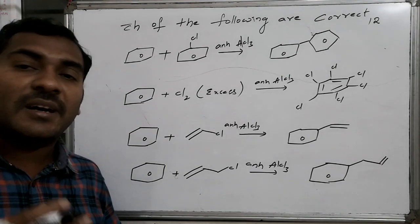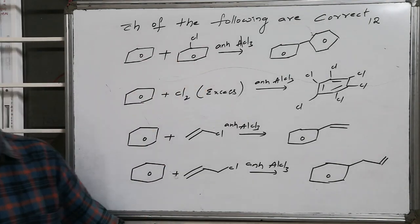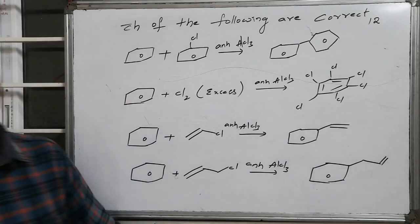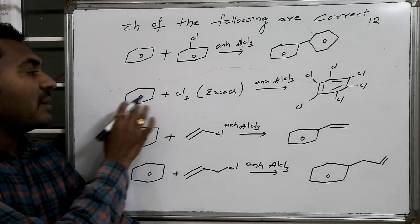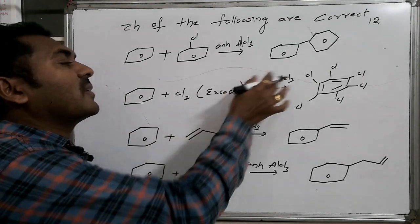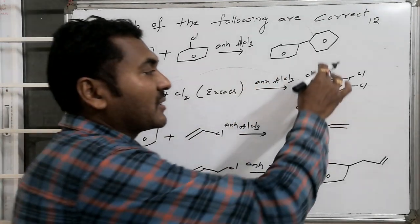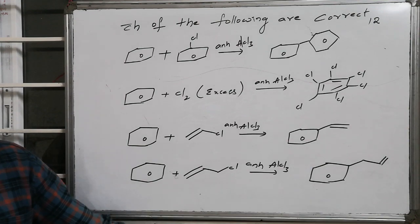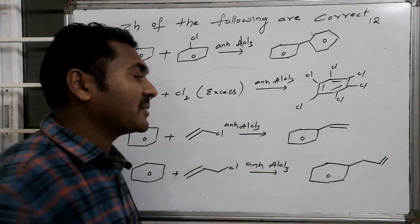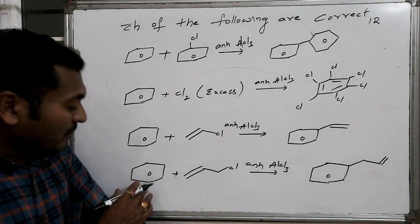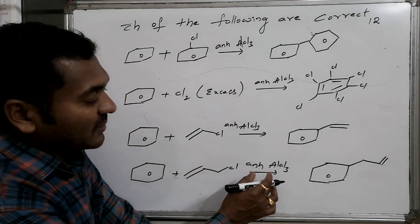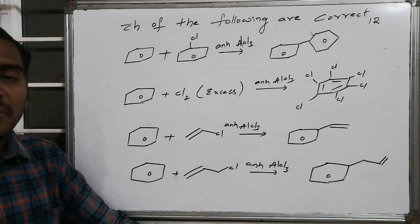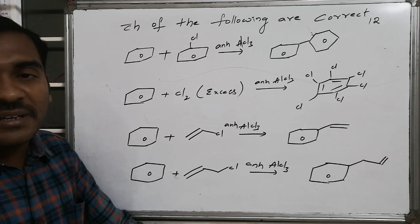The four options are: (1) benzene plus chlorobenzene with anhydrous AlCl₃ converted to diphenyl; (2) benzene plus excess chlorine with anhydrous AlCl₃ converted to hexachlorobenzene; (3) benzene plus vinyl chloride with anhydrous AlCl₃ converted to styrene (vinylbenzene); (4) benzene plus allyl chloride with anhydrous AlCl₃ converted to allyl benzene.